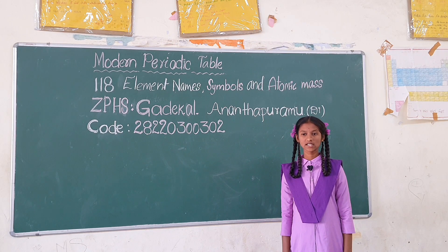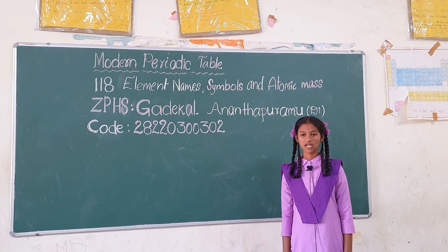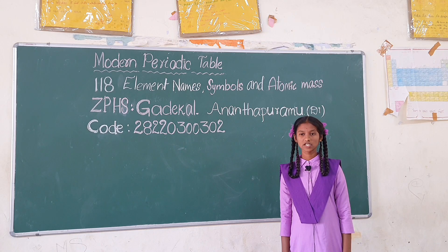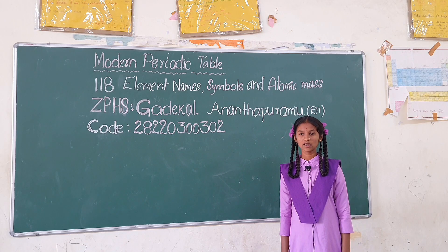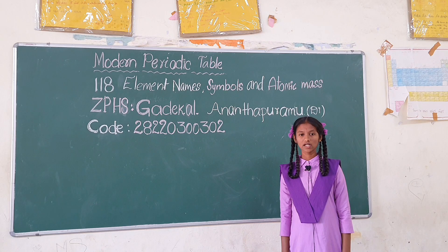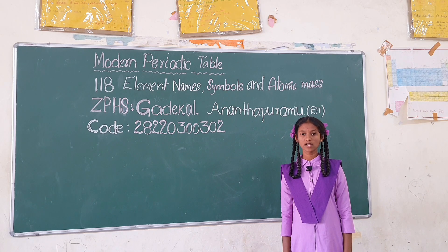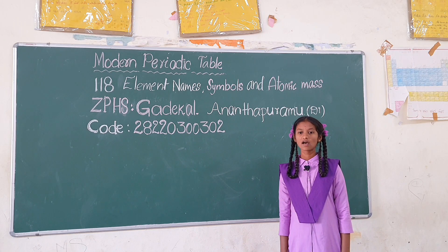Oxygen O 16, Fluorine F 19, Neon Ne 20.18, Sodium Na 22.99, Magnesium Mg 24.31, Aluminium Al 26.98, Silicon Si 28.09, Phosphorus P 30.97, Chlorine Cl 35.45, Argon Ar 39.95.